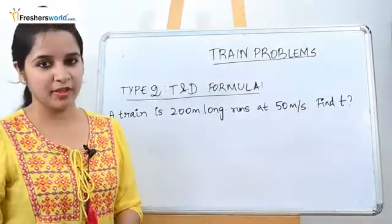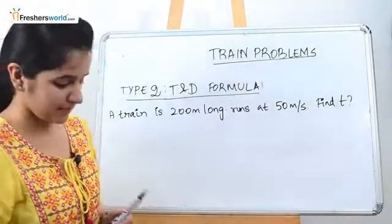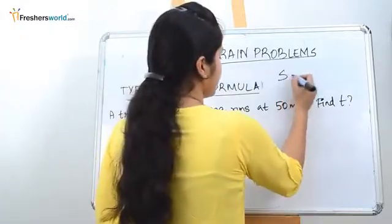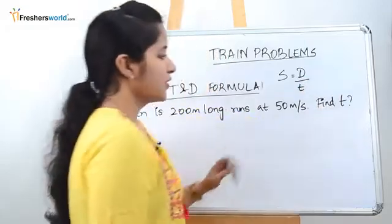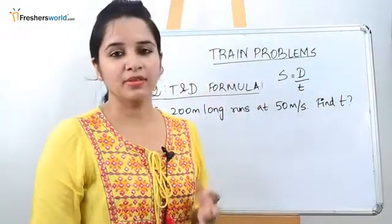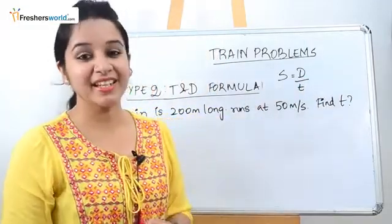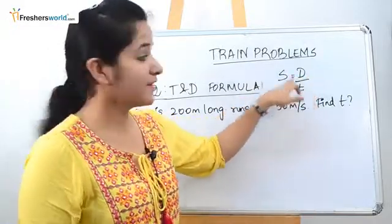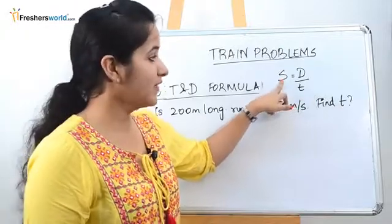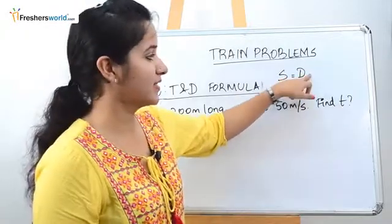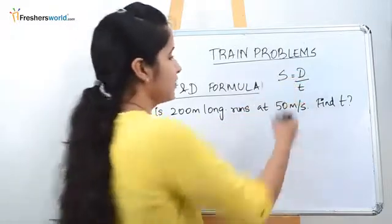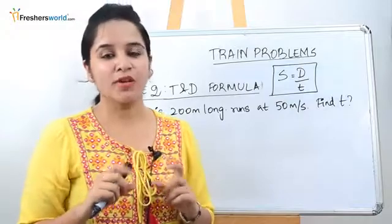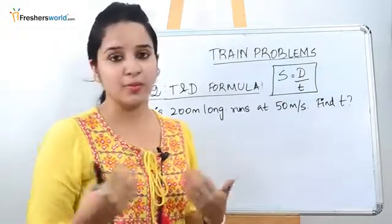Type 2 of the train problems is the time and distance formula. The formula to remember here is: speed is equal to distance divided by time. This is the most common question you can face in any aptitude exam. They will either give you the distance and time and ask you to find the speed, or give you the speed and time and ask you to find the distance, or vice versa. Let's solve a simple problem to understand the formula better.